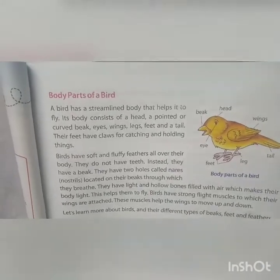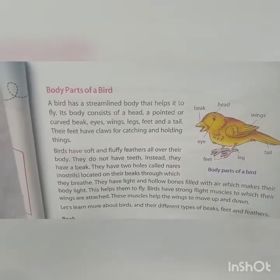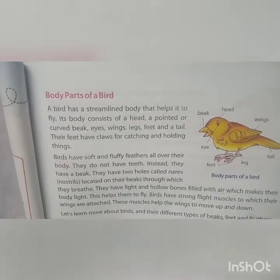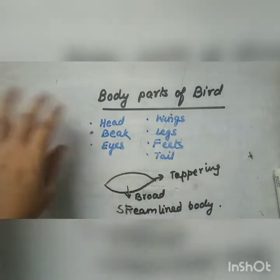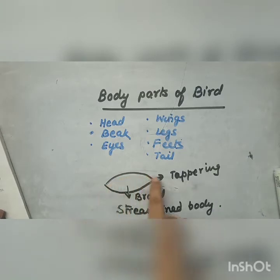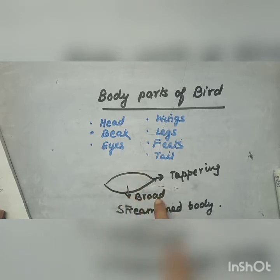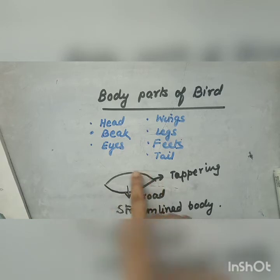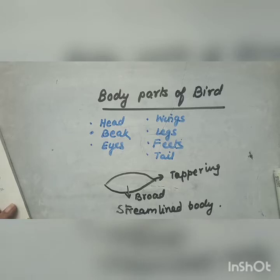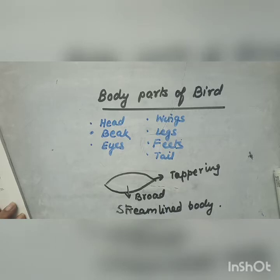Now you can see that a bird has a streamlined body. What does streamlined body mean? This part is broad and here you have a tapering part — this is called a streamlined body. So why does a bird have a streamlined body? It enables them to fly. Because they fly, they have to have a streamlined body.